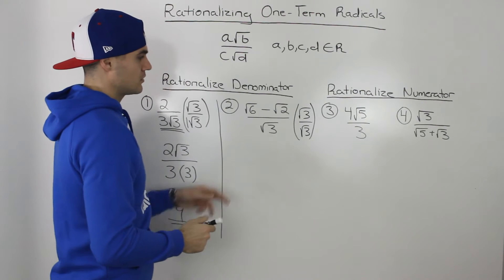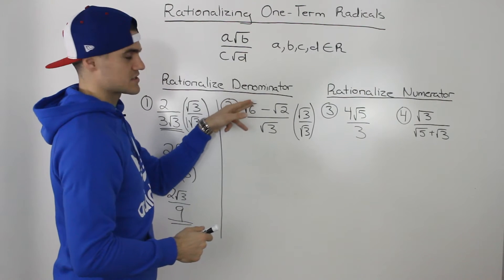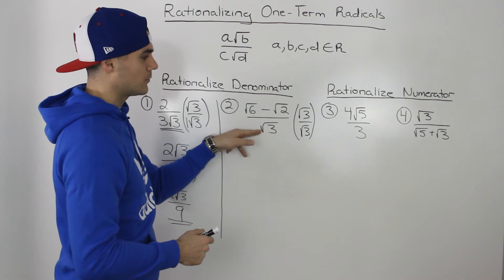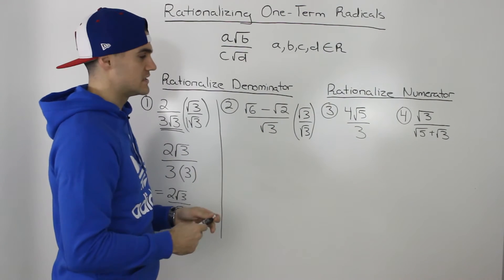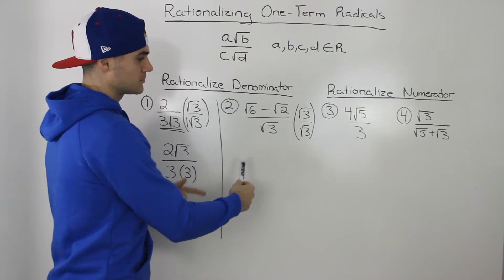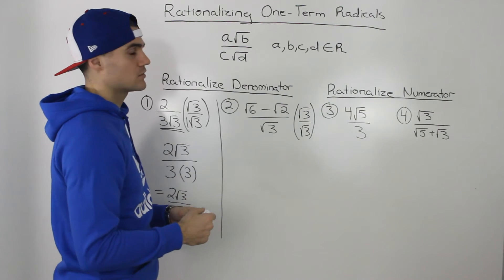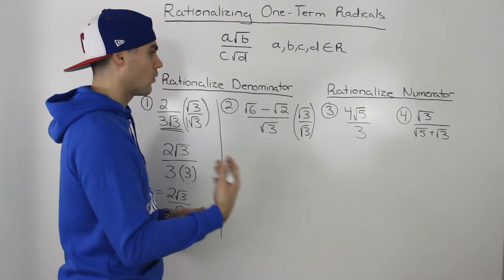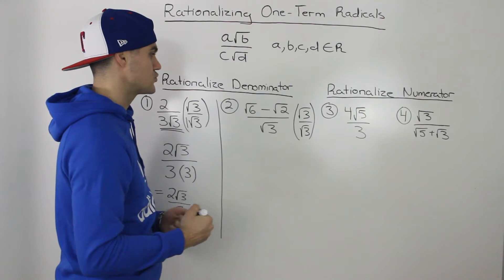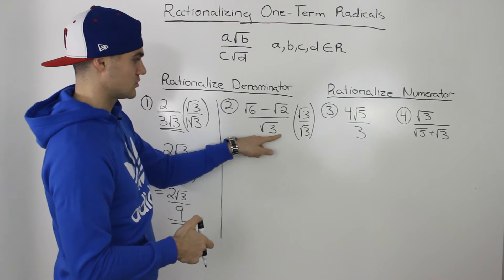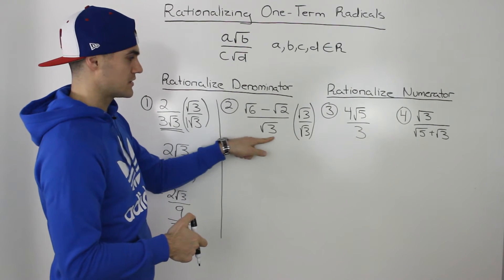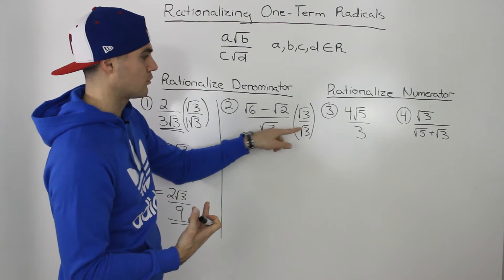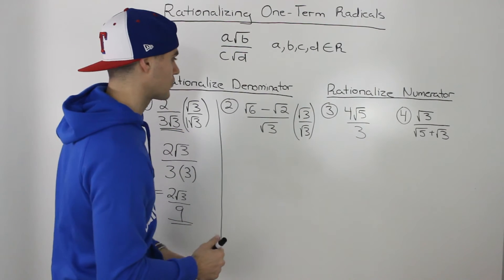We would just multiply it by root 3 over root 3. For example, if this was switched — if the root 3 was in the numerator and the root 6 minus root 2 was in the denominator — then the format would be different. We would have to multiply by the conjugate and rationalize a two-term radical, which we'll cover in a future video. But because there's only that one term in the denominator, we still just multiply by root 3 over root 3.